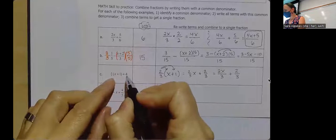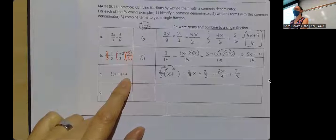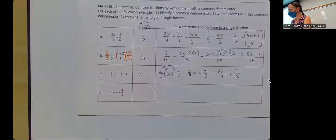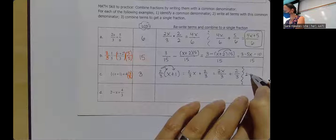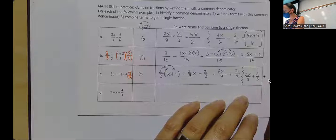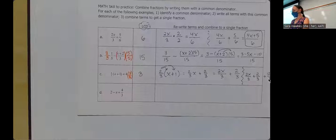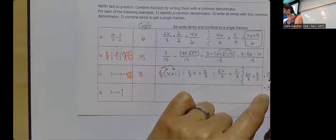That was all just to deal with the first part. I also have that four. These two already have a common denominator, but that four does not have a denominator at all. So I'm going to call my denominator three, and I just have to deal with the four. I'm going to give that four a denominator of three by creatively multiplying by one. So in terms of combining all this stuff together, I'm going to have 2x over three plus two over three plus four times three — that's 12 over three. If I put all of that together, that's going to equal 2x plus 14 all over three.